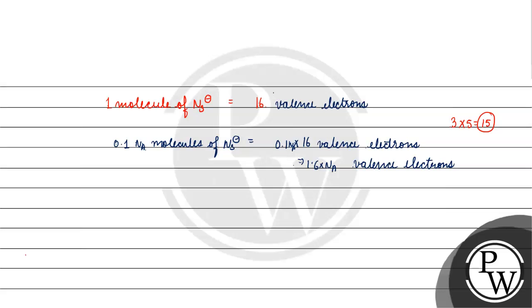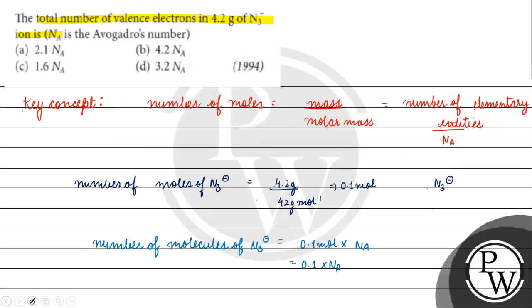Coming back to the question, the correct answer is option C: 1.6 × Avogadro's number. I hope you understood it well. Thank you and all the best!